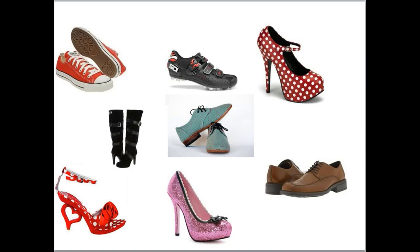The beauty of a dichotomous key is you can use it to organize literally anything out there, as long as you can group things based on their physical unchanging characteristics. What I have here is a sampling of a bunch of different types of shoes. I'm going to go through the process that we use as entomologists to create dichotomous keys for insects, except using something you're more familiar with. Think about this — this is literally what we do in the lab with insects from Texas, the US, or even the world.